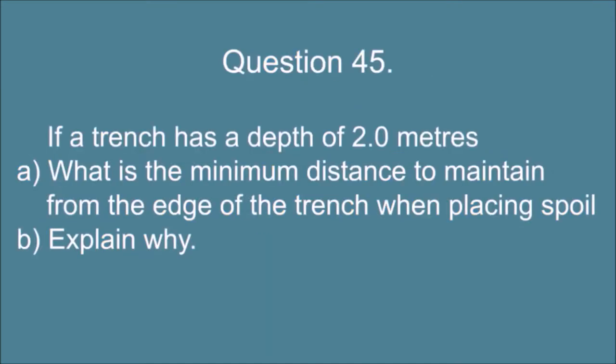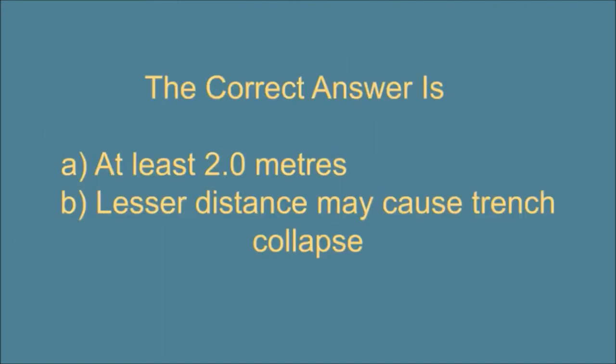Question 45. If a trench has a depth of 2 meters, a) what is the minimum distance to maintain from the edge of the trench when placing spoil, b) explain why? The correct answer is: a) at least 2 meters, b) lesser distance may cause trench collapse.